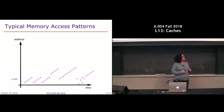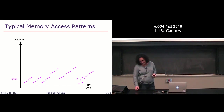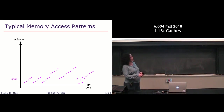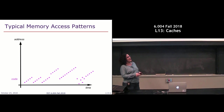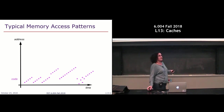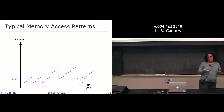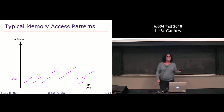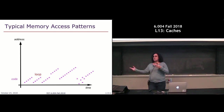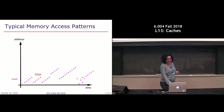Let's start by looking at code. If I look over time, I'm fetching one instruction, then the next, and the one after, and then I come back and fetch the same set of instructions all over again. What does that represent in your code when you do something like that? A loop. And then I might have some branch instruction that takes me somewhere else, and again I'll have a sequence of consecutive instructions.